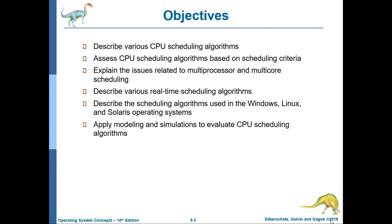The objectives of Chapter 5 are: describe various CPU scheduling algorithms, assess CPU scheduling algorithms based on scheduling criteria, explain the issues related to multiprocessor and multicore scheduling, describe various real-time scheduling algorithms, describe the scheduling algorithms used in Windows, Linux, and Solaris operating systems, and apply modeling and simulations to evaluate CPU scheduling algorithms.